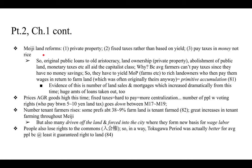Noro then looks at the importance of Meiji land reforms. The main one was private property, but another was fixed taxes rather than taxes based on agricultural yield — a major implication for farmers in cases of poor harvests. Thirdly, taxes were now paid in money, not rice. The original public loans to the old aristocracy, private land ownership, the abolishment of public land, and monetary taxes all aided the new capitalist class.